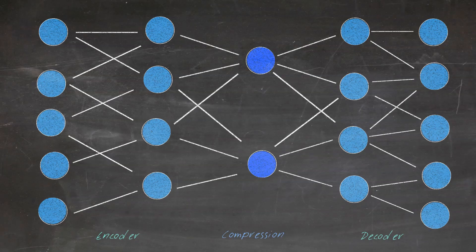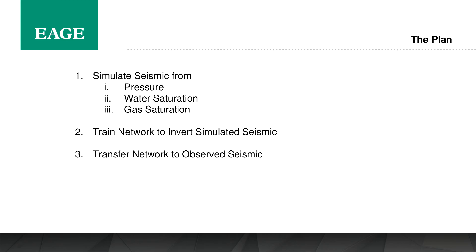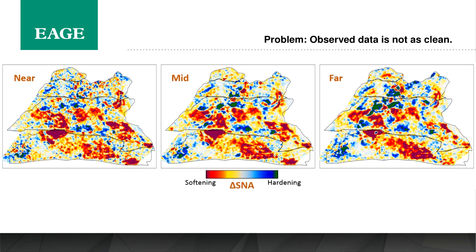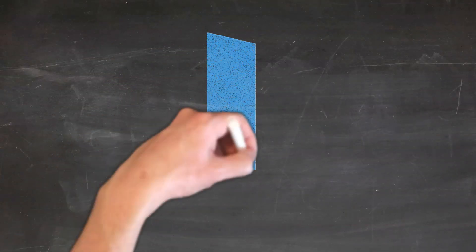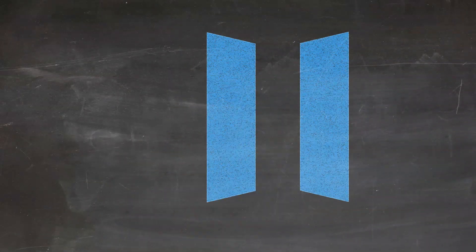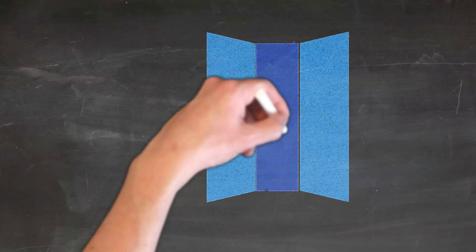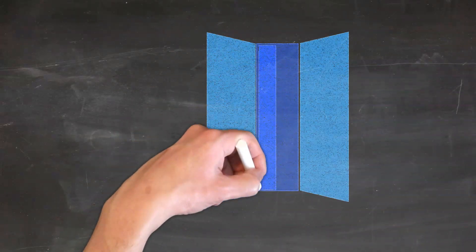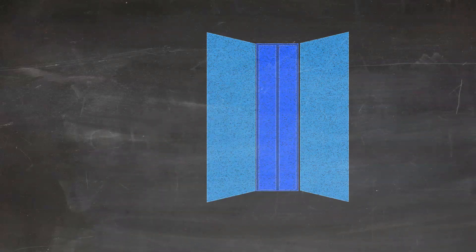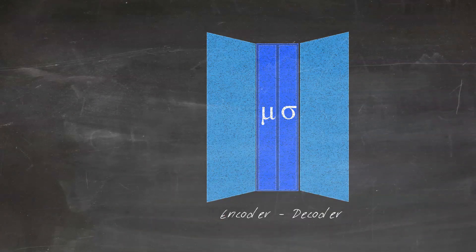The plan: simulate our seismic from pressure and water saturation from our Eclipse simulator, then train our network to invert simulated seismic, and then transfer the network to the observed seismic. This transfer is tricky because seismic data can be really noisy — we have noise coming from everything. We feed this into our encoder-decoder. In the middle I'm using a trick: mu is our mean and sigma is our variance, so we're learning a Gaussian in the middle — a distribution over our data. That means we can take noisy input data and get cleaner output.